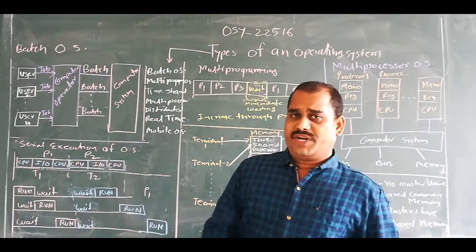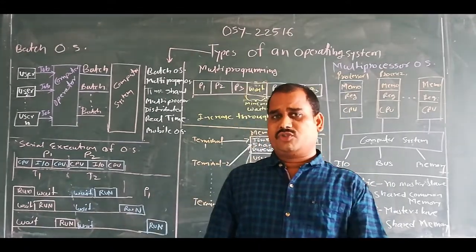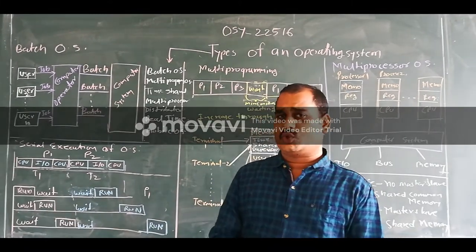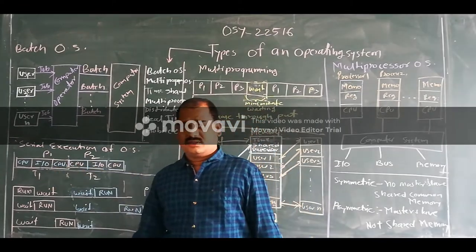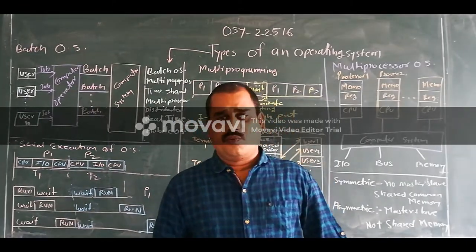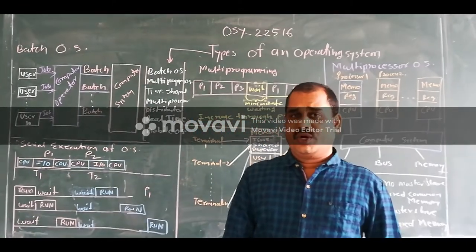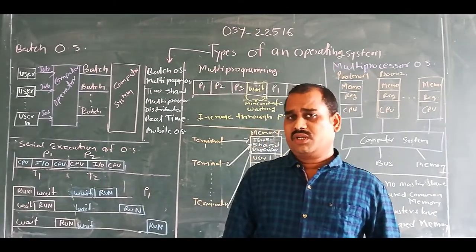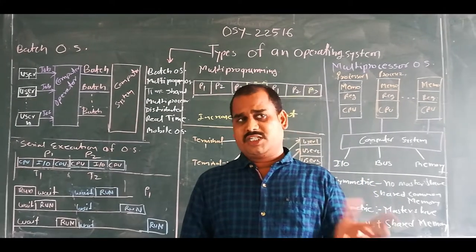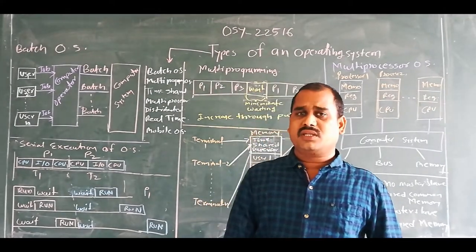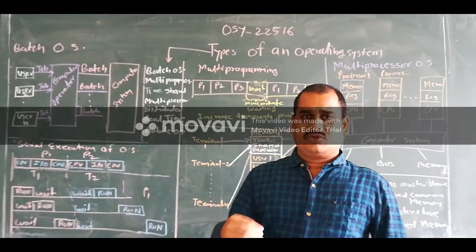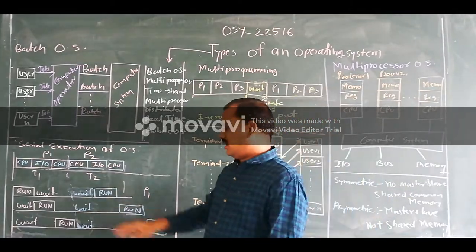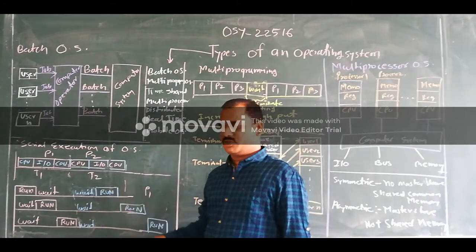Concurrently means whenever the operating system goes for the execution of a specific job and that process wants to perform an I/O operation, or it is in a wait state, that time the OS leaves that process and switches to another process for execution. If the next process also repeats the same thing, then the multiprogramming operating system switches to another process, and so on. In this fashion, it will allocate the CPU to the next process, next process.